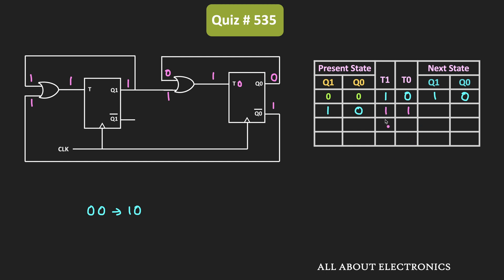Both flip-flop inputs are equal to 1, so they will both toggle their present state at the next clock pulse. Q1 will become 0 while Q0 will become 1. The output of the synchronous sequential circuit will go from the 10 state to the 01 state.